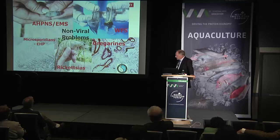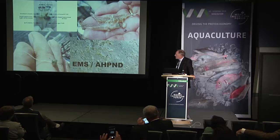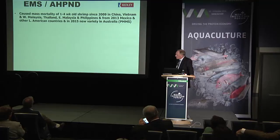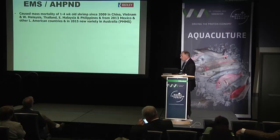Moving to non-viral problems — the main ones are EMS, white feces syndrome, and EHP caused by microsporidians. EMS gives you a whitened and shrunken hepatopancreas, with animals dying very early, even before one or two weeks old in the ponds. This originated in China in 2009, affecting very young animals within the first month of culture. It spread into Vietnam, Malaysia, Thailand, East Malaysia, and the Philippines in 2010-11, then got into Mexico in 2013, and from Mexico it's spreading through Central America.